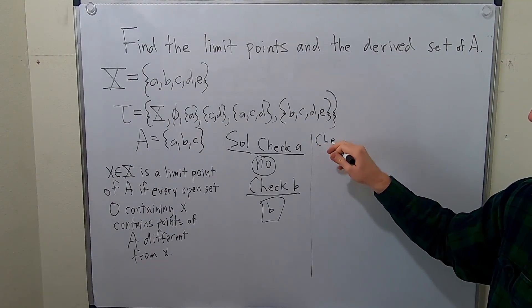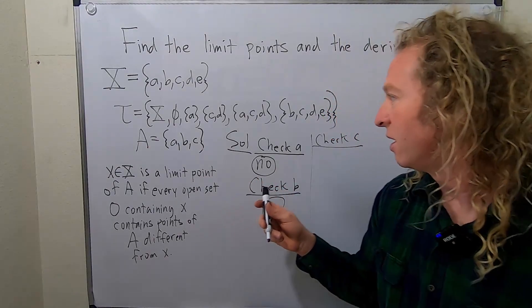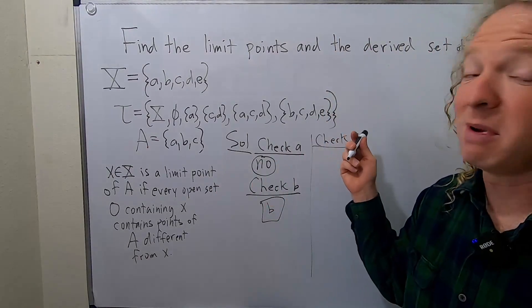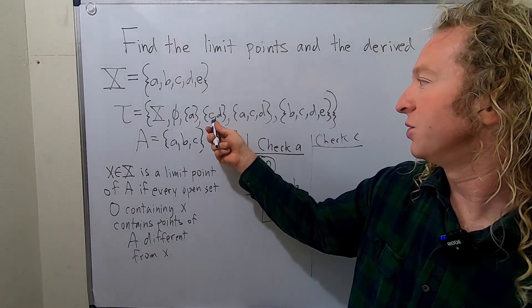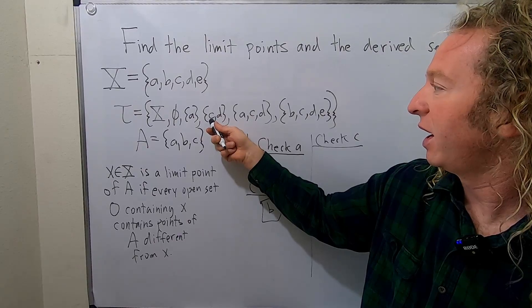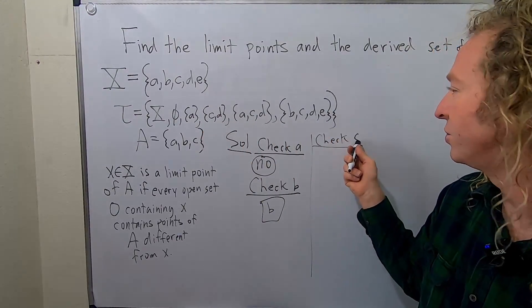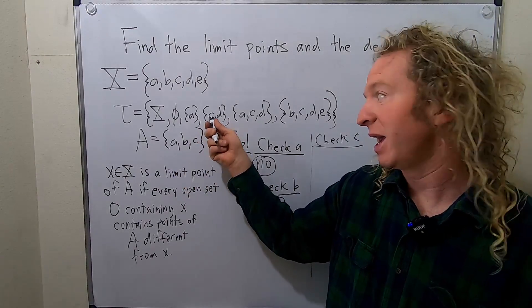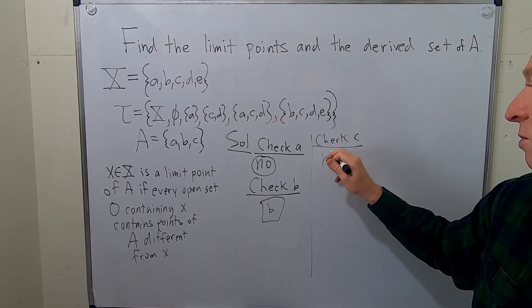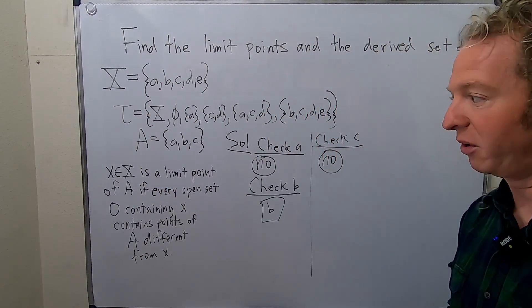Let's check C. Looking for an open set containing C: here is one. Does it contain points of A different from little c? No — it has D, but D is not in A. So this fails the definition. Since we only need one failure, C is not a limit point.